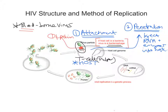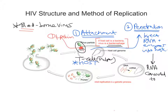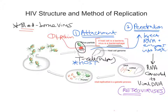HIV then uses the reverse transcriptase enzyme to convert the virus's RNA into viral DNA. Viruses that can take RNA and convert it into DNA belong to a special group called the retroviruses. So once we've had the injection of RNA and enzymes into the host, the RNA is converted to viral DNA. Those viruses able to do this are known as retroviruses.